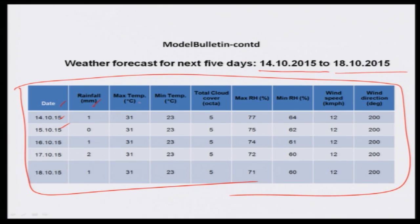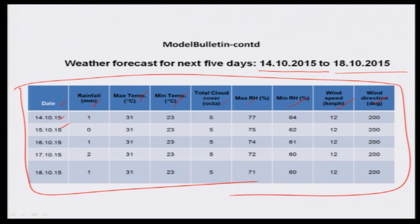The forecast table includes: rainfall quantity, maximum temperature, minimum temperature, total cloud cover, maximum relative humidity recorded in the morning, minimum relative humidity recorded in the evening, wind speed in kilometers per hour, and wind direction in degrees. We have studied this: 90° means east, 180° means south, 270° means west — and within that you can have 16 directions.